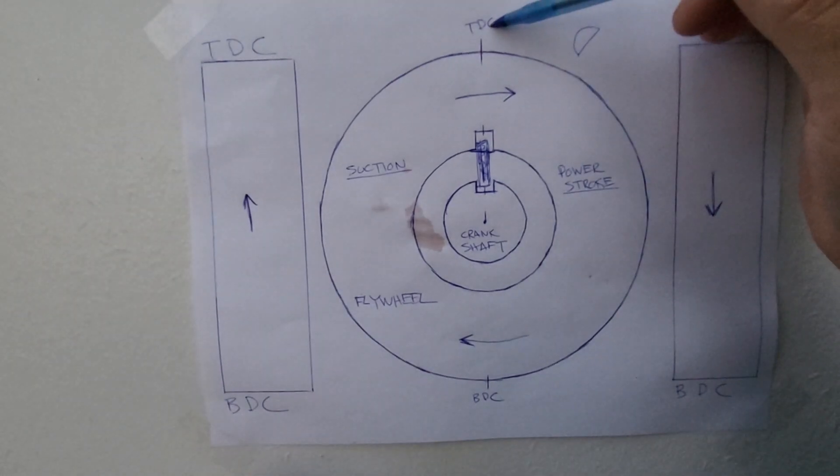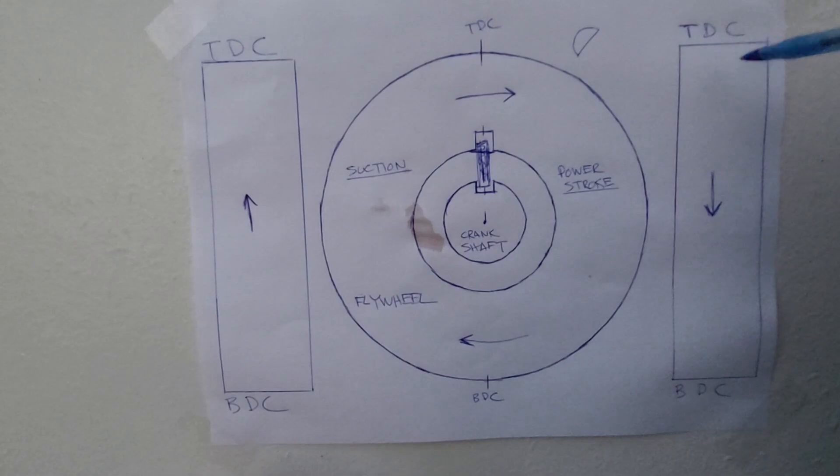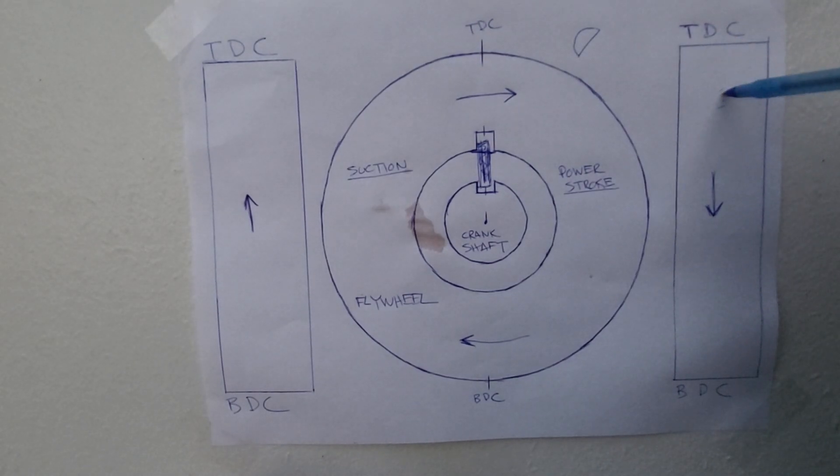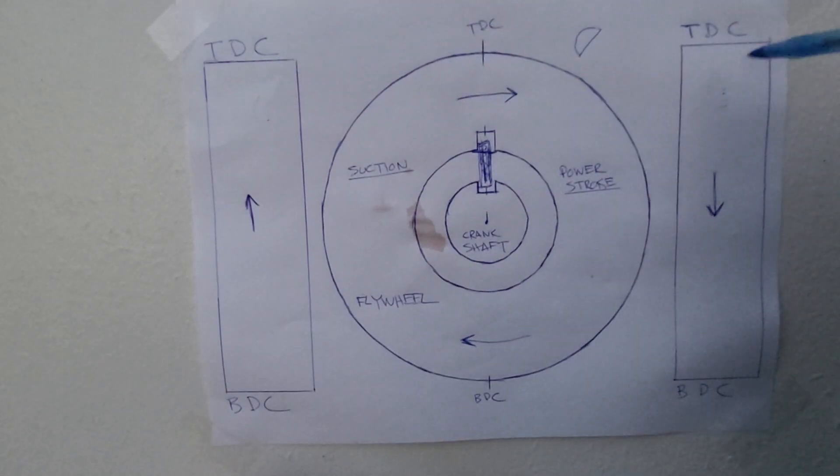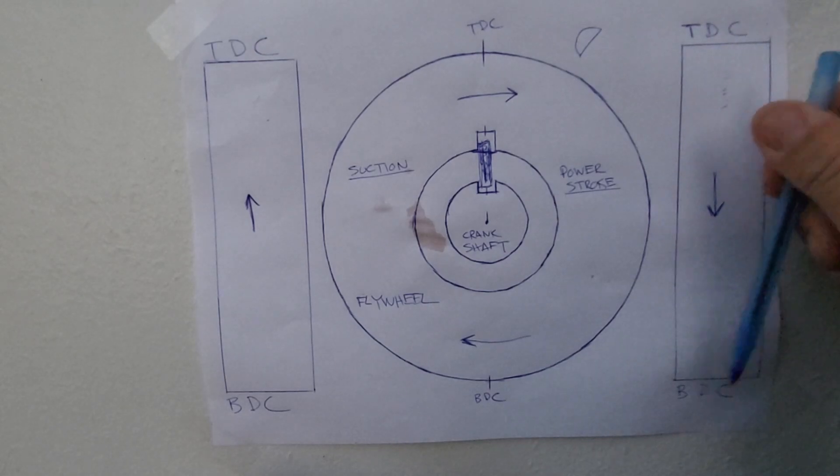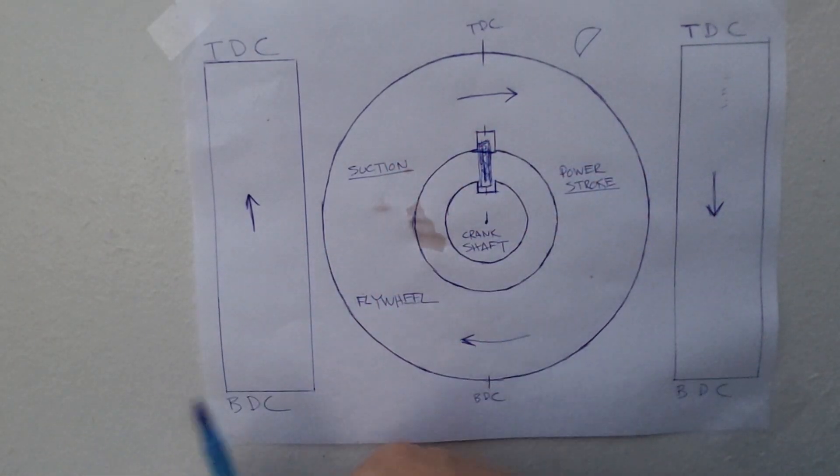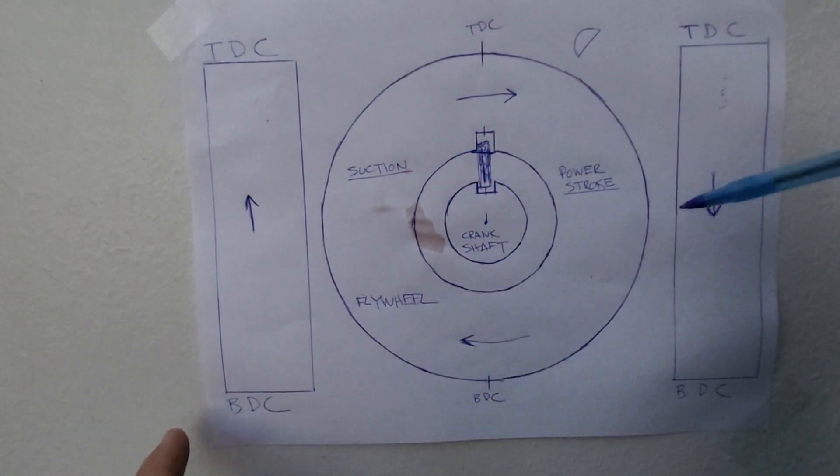So this is top dead center. This represents the piston. This represents the piston as well. Now this represents the piston with the piston moving down, and this represents the piston moving up. They're the same, these two are the same, they're just two separate and there's a reason for that.